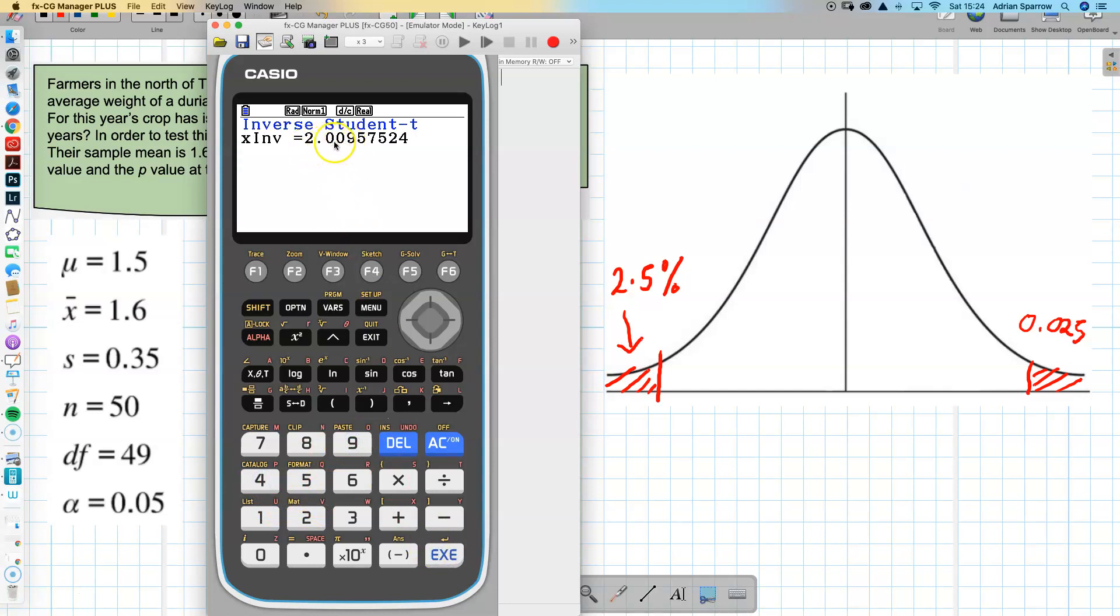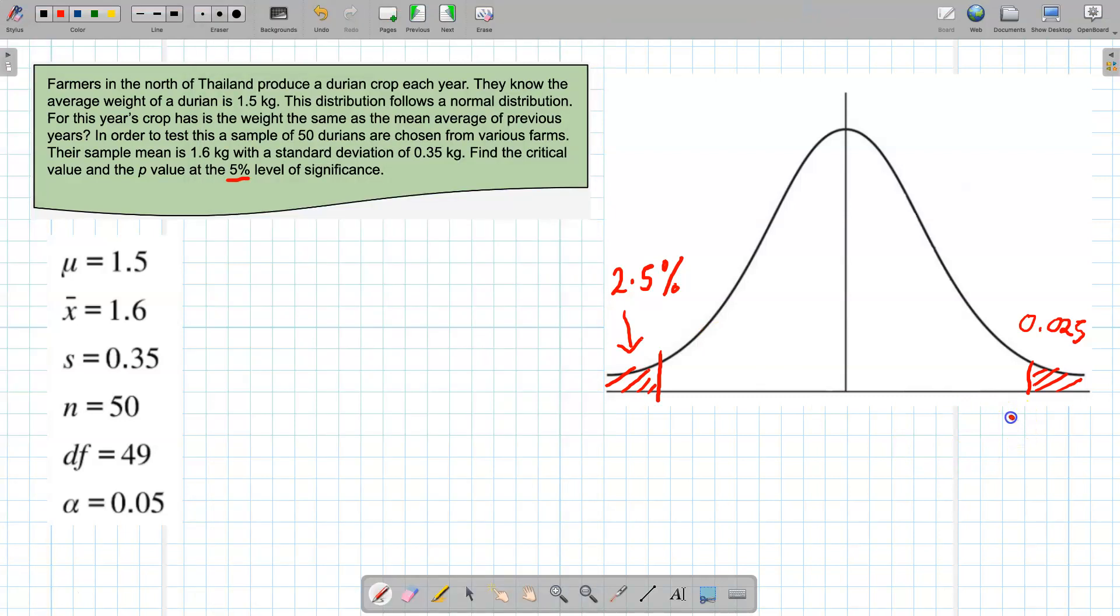So this gives me 2.01, so that means that on each end here they're my critical values plus and minus 2.01. And in a minute we're going to do a test, or on the next video I should say, we'll see if our t-value lies inside here and if it does we will reject H₀.